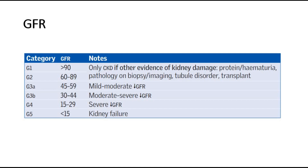G3 can be divided into G3A and G3B. Then there is G4, which is 15 to 29, indicating severe reduction in glomerular filtration rate, and G5, which is less than 15, indicating kidney failure.